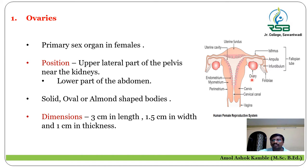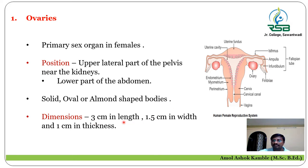The position of the ovary is that it is attached to the upper lateral part of the pelvis, near to the kidney, and located at the lower part of the abdomen. The nature of the ovary is that it is a solid, oval, almond-shaped body. The dimensions of the ovary are about 3 cm in length, 1.5 cm in width, and 1 cm in thickness.